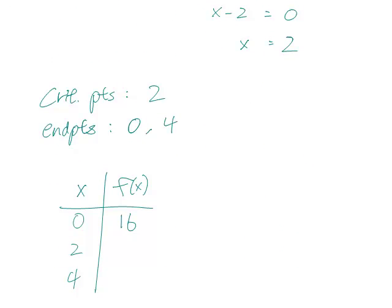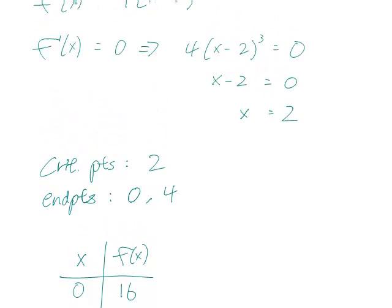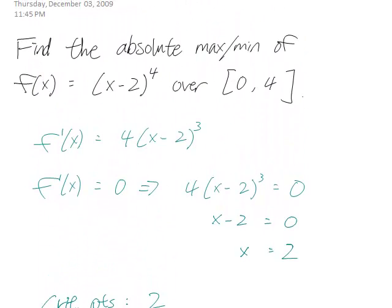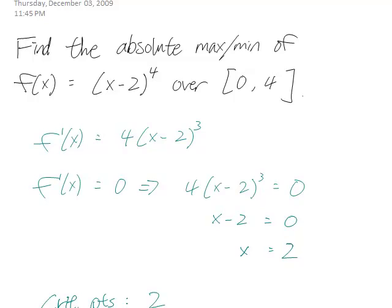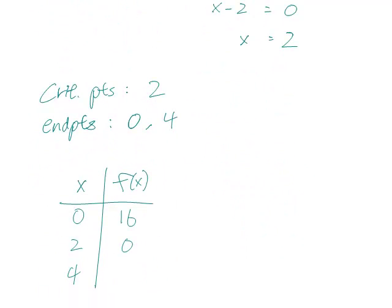When x is 2, since f(x) is (x-2)^4, you would just get 0. And at x=4, 4-2 equals 2, and 2^4 is also 16.